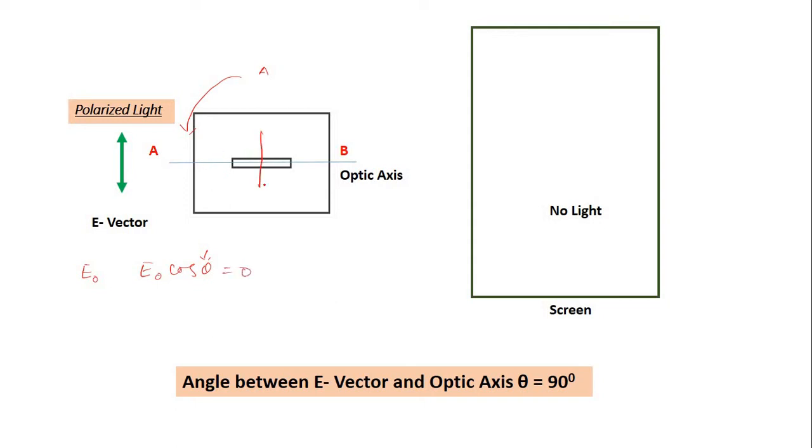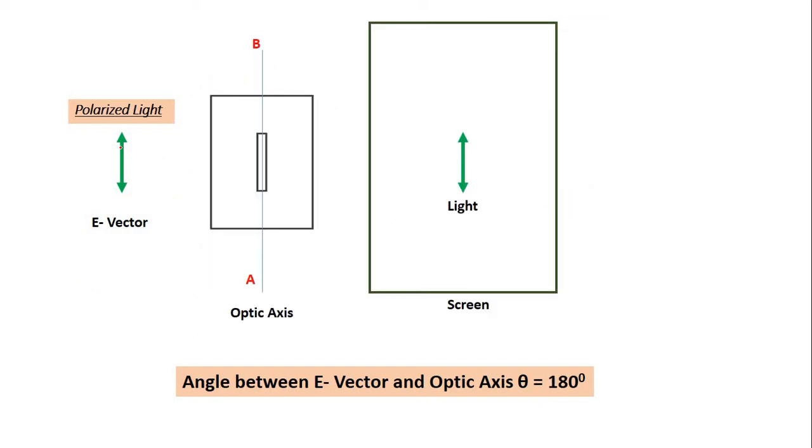So if this E0 vector comes over here like this, its component along this optic axis is 0, so no light is obtained on the screen. Again, if I turn A by another 90 degrees, so that means by 180 degrees from the beginning like this, B comes up. So now E0 vector can pass through and again you will see the light on the screen.